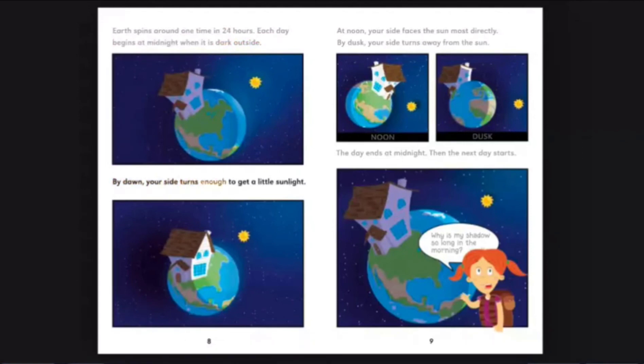By dawn, your side turns enough to get a little sunlight. At noon, your side faces the sun most directly. By dusk, your side turns away from the sun. The day ends at midnight. Then, the next day starts.